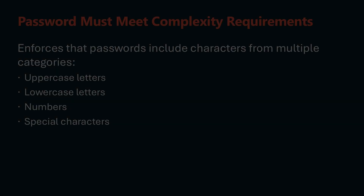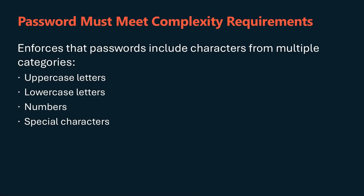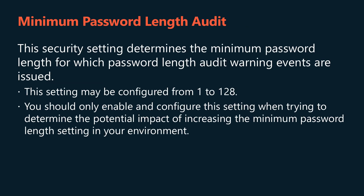The password must meet complexity requirements policy ensures that passwords include characters from multiple categories, including uppercase letters, lowercase letters, numbers, and special characters, to make them more difficult to guess or brute force. The minimum password length audit policy determines the minimum password length for which password length audit warning events are issued. This setting may be configured from 1 to 128, and you should only enable it when trying to determine the potential impact of increasing the minimum password length setting. If this setting is defined and greater than the minimum password length, and a new account password is shorter than this setting, an audit event will be issued.